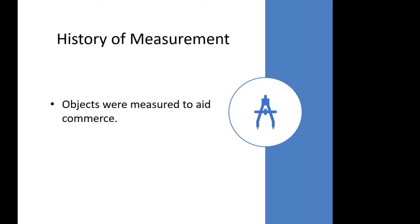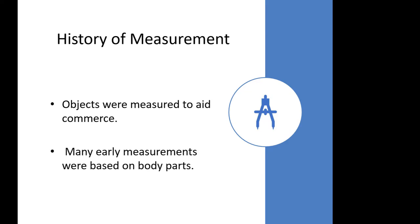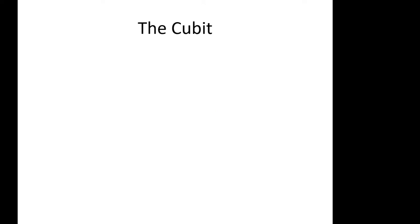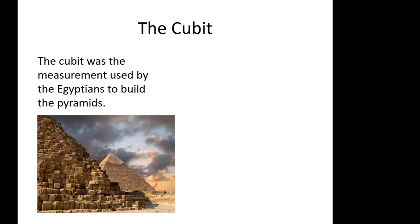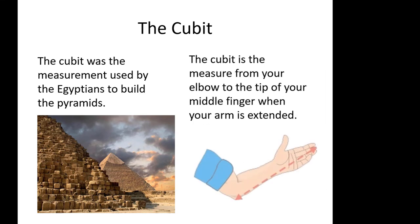From the beginning, measurement was used to aid commerce, and many early measurements were based on body parts. Going back to Egyptian times, they had a measurement unit called the cubit. The cubit was the measurement from your elbow to the tip of your middle finger when your arm is extended. It functioned very well — the pyramids are still standing — so it was a totally valid measurement unit to use.